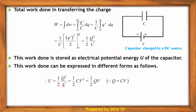Energy in terms of charge and capacitance, energy in terms of capacitance and voltage, and energy in terms of charge and voltage. These are the three different forms of expressing the energy stored in a capacitor.